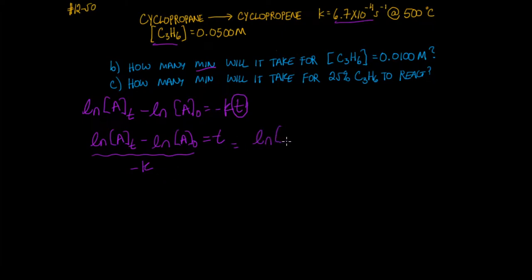So the natural log of A at time t is afterwards 0.0100 and the initial concentration is 0.0500. And we divide all this by minus the rate constant here, 6.7 times 10 to the minus fourth. And that's in units of per second.